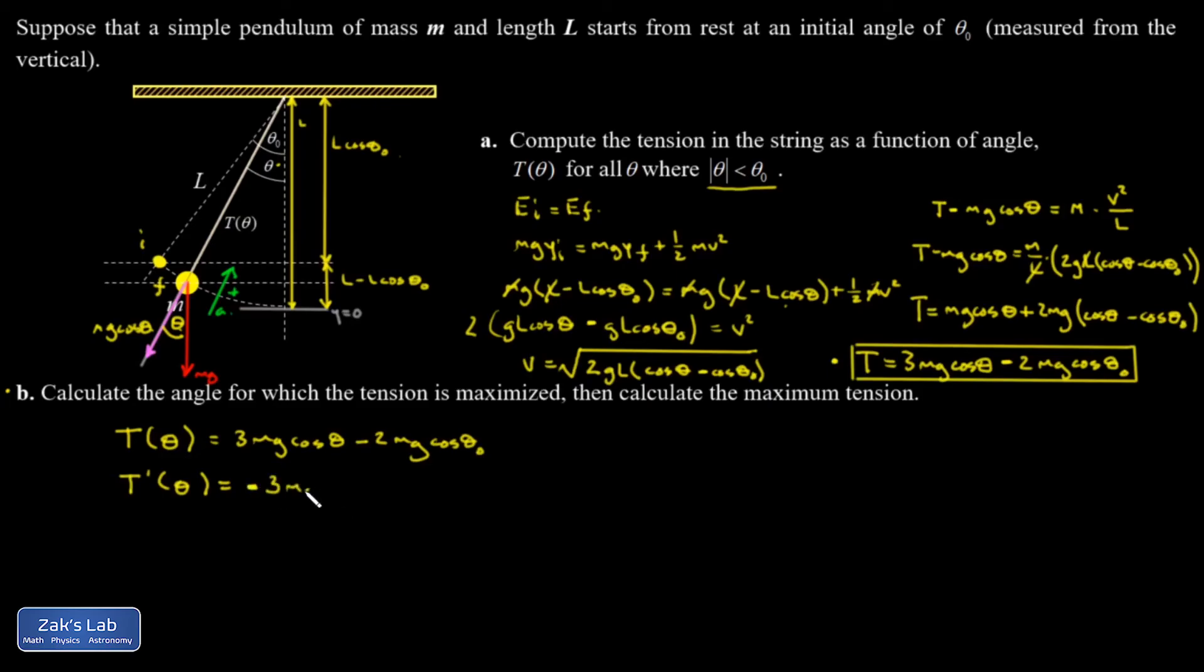We'll set that equal to zero and ask what theta has to be to make this true. Well, the sine of zero is zero, so I end up with theta equals zero. It's what I expected. Again, looking at the diagram, theta equals zero means straight down.